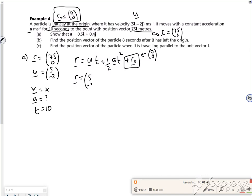So 5 minus 2 times by 10 plus a half of a times by 10 squared. So that's what we've got there. We've got that position, I know that that's 75, 0.